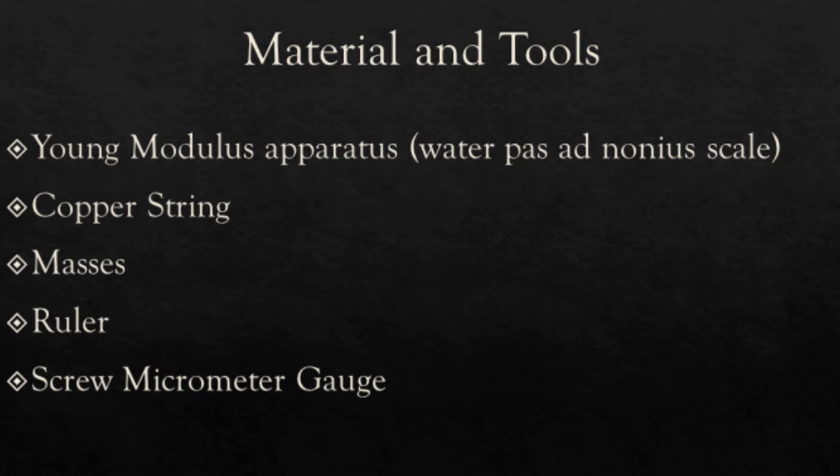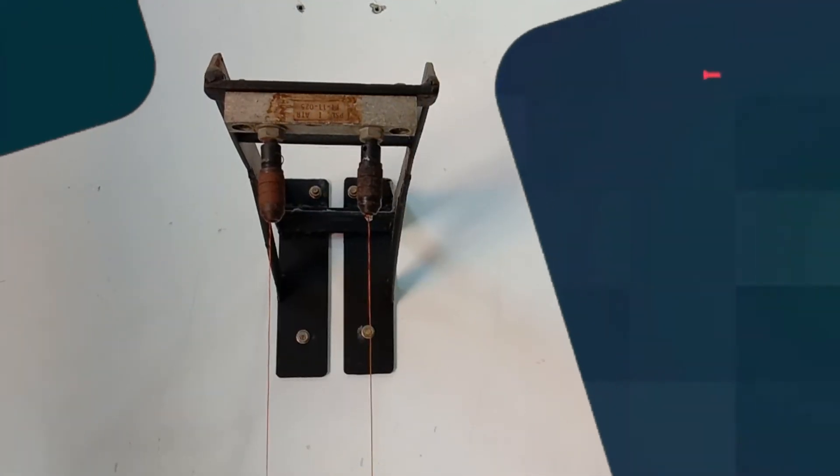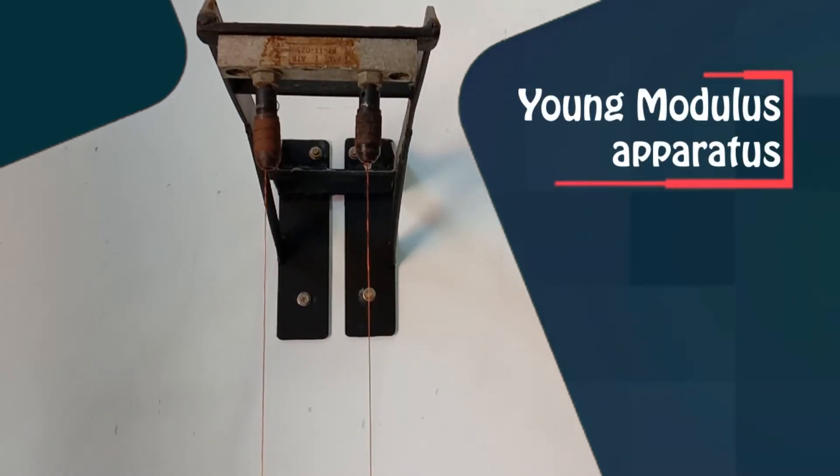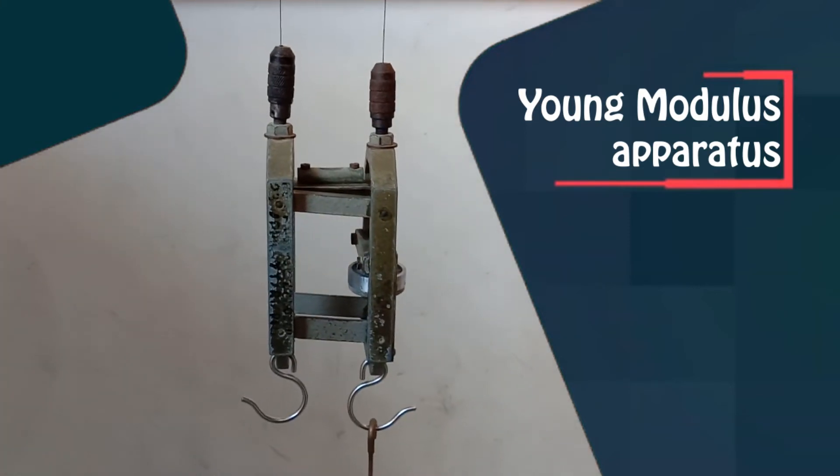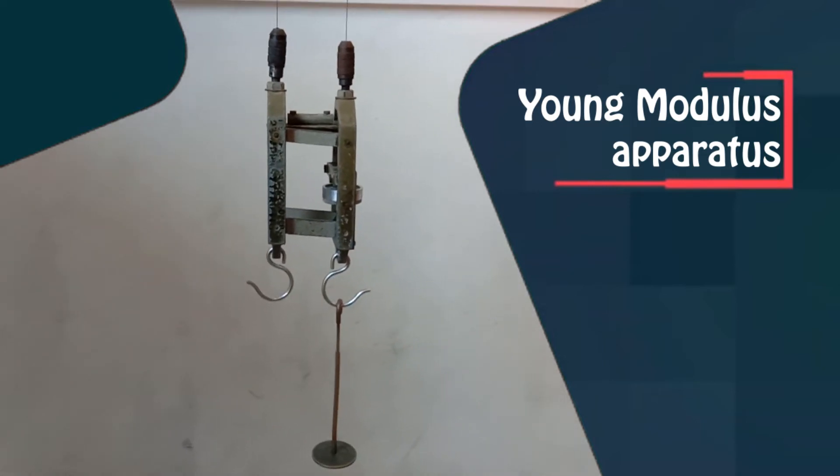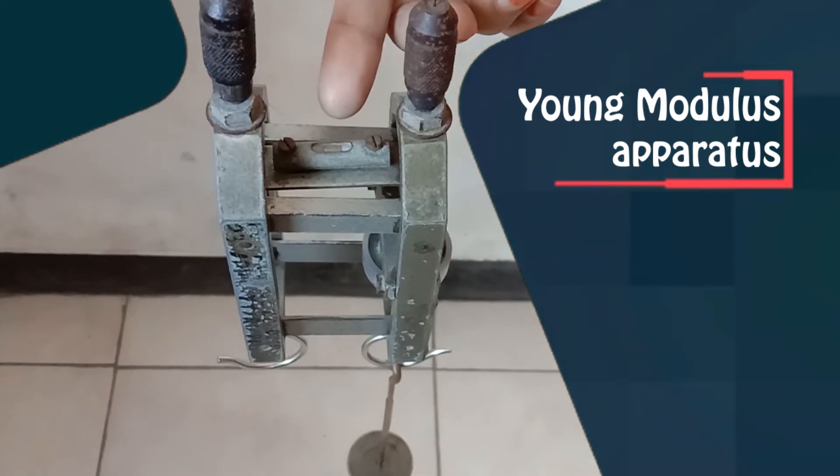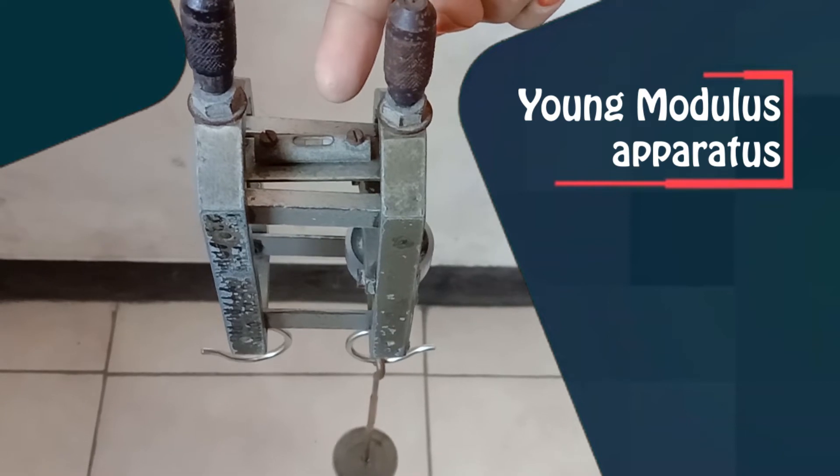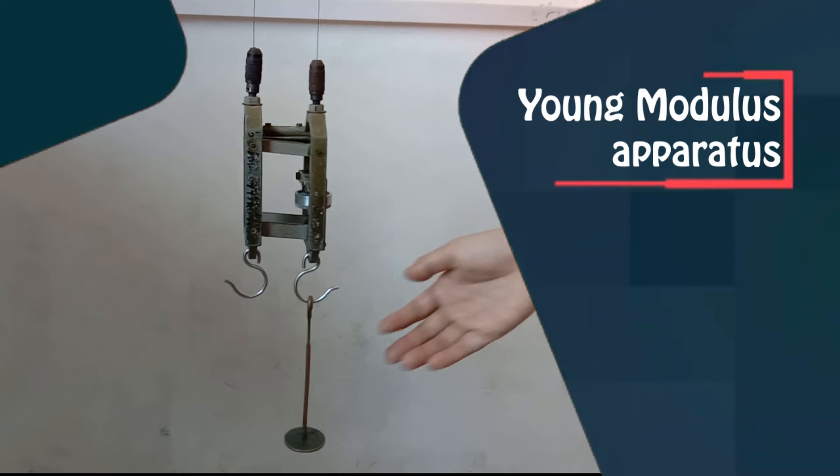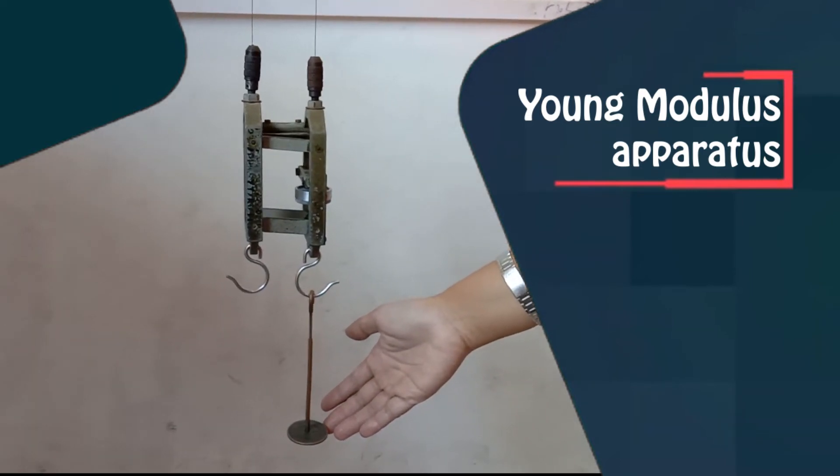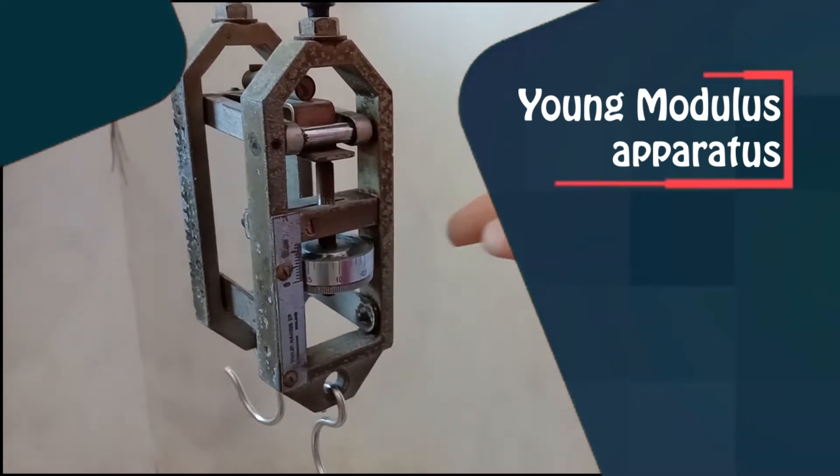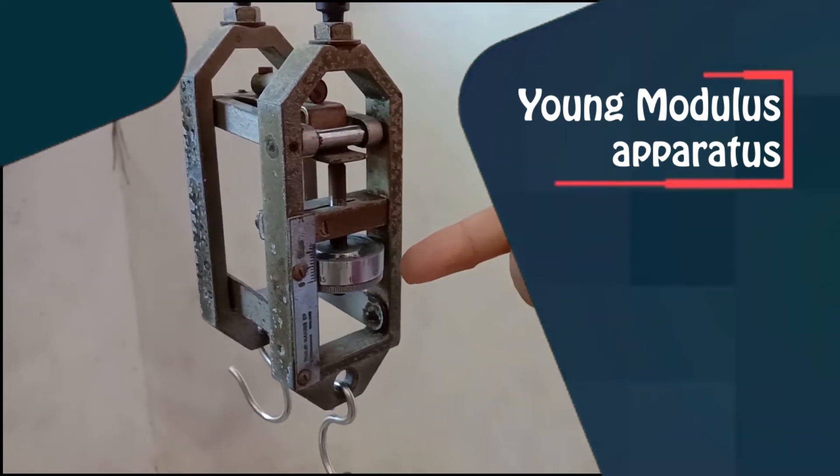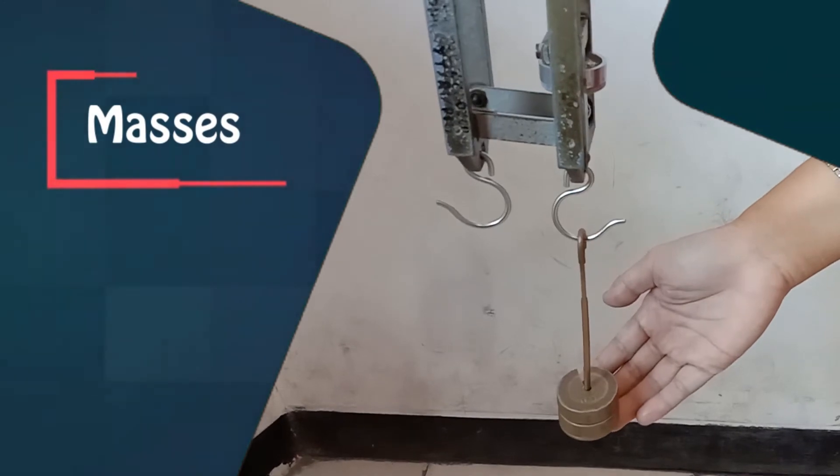Now what are the materials and tools that we are going to use in this experiment? First of all, you are going to use the Yang Modulus apparatus. And the Yang Modulus apparatus, you are going to have two parts. The first one is the static part, and the other one is the dynamic one which is where you will apply the stress and strains. You need to make sure that before you apply the stress, the water pass should be in level. And then when you apply some masses underneath and the material has got the stress, then it is going to tilt. So you need to put it back into level conditions.